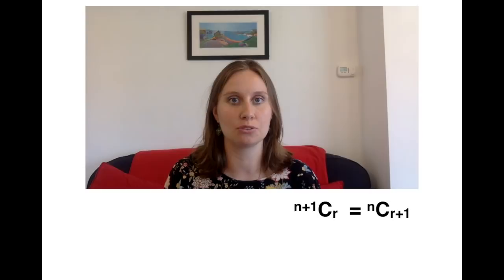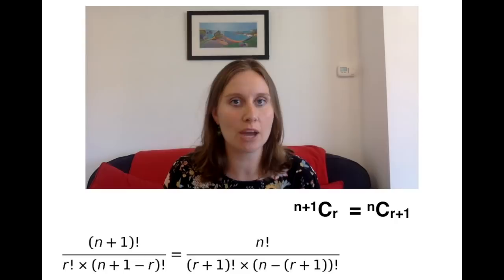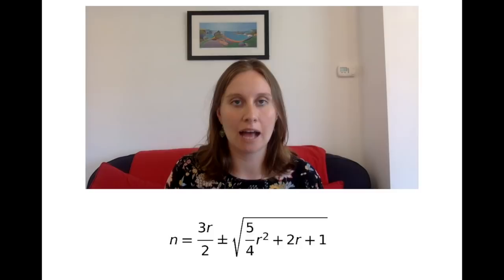And so I thought, well, I'm going to see if I can find any other solutions that fit this form. So I used the formula for n choose r and made this equation, and then did some rearrangements, and got n in terms of r, so that I could just stick it into Python.